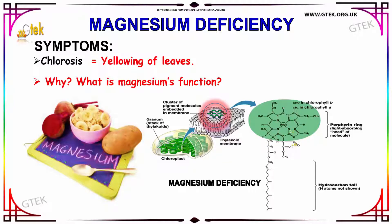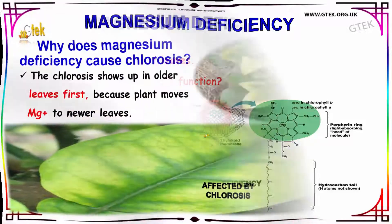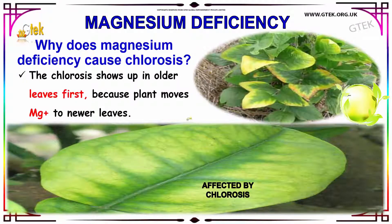This portion is also called the porphyrin ring, and this portion is called the hydrocarbon tail. This is what is affected in magnesium deficiency. Why does magnesium deficiency cause chlorosis? The chlorosis shows up in the older leaves first.